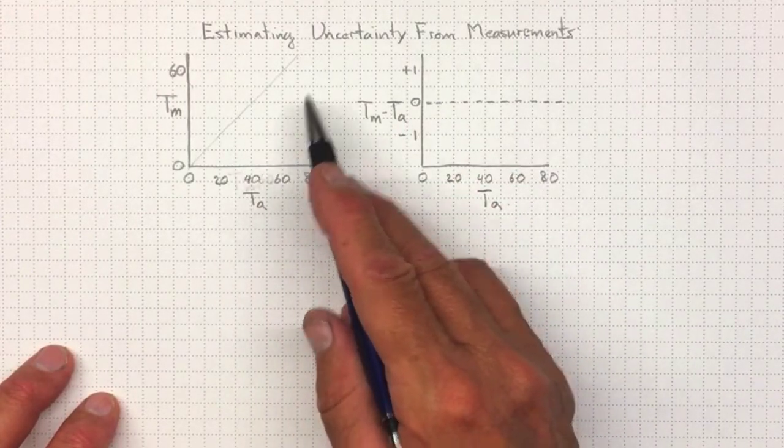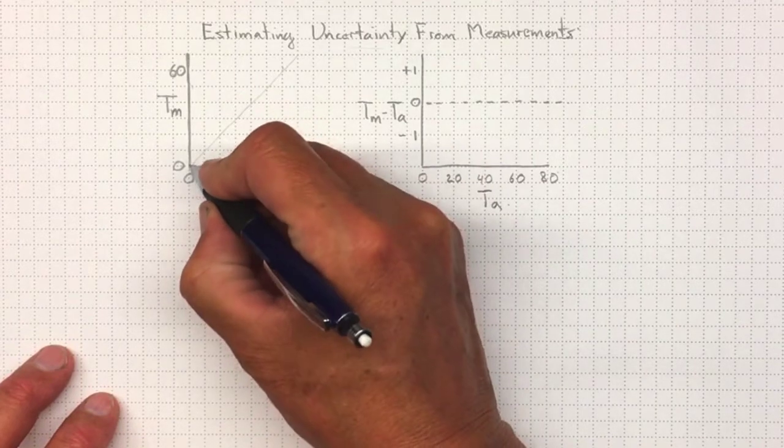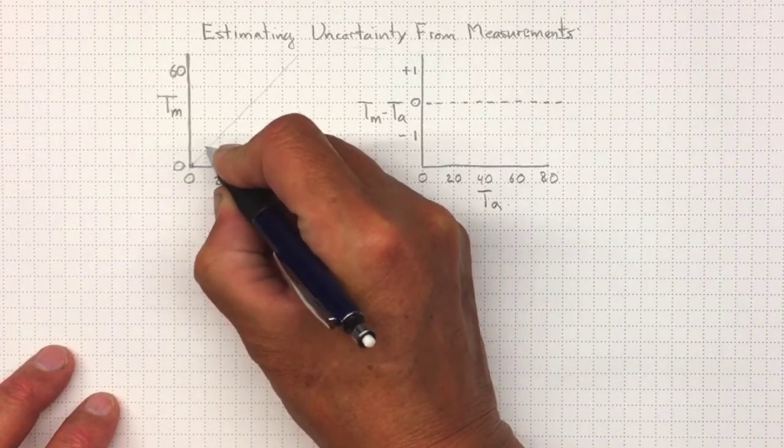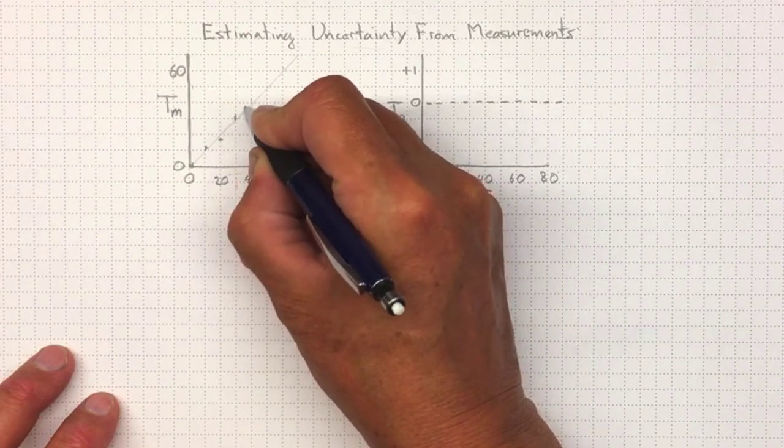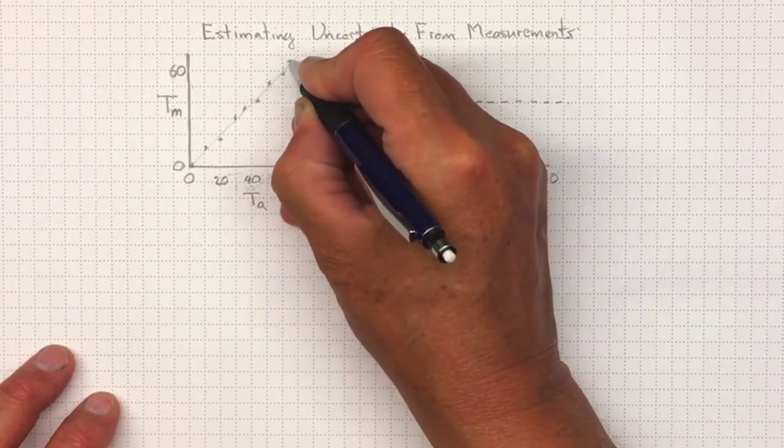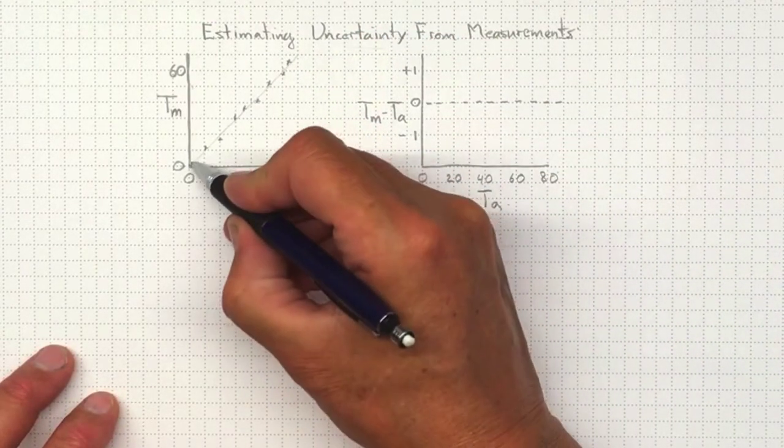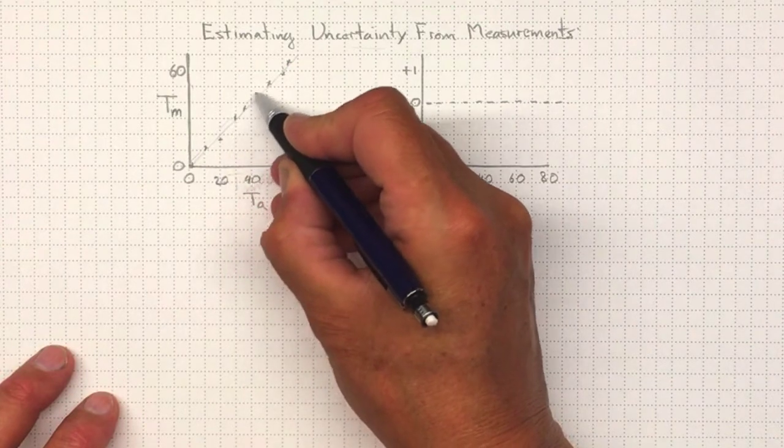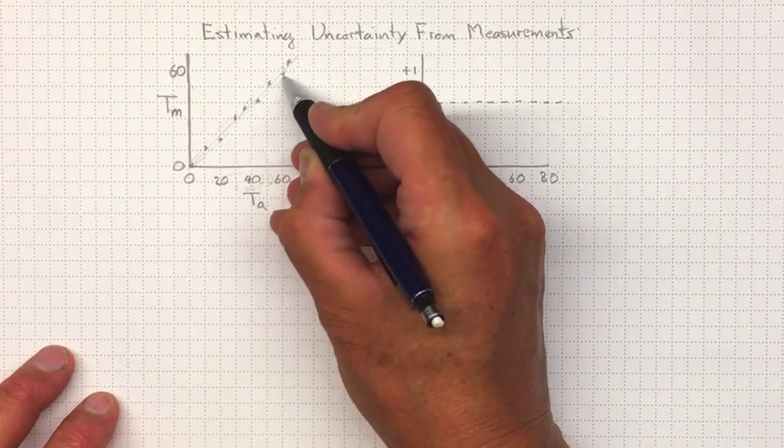But we know we don't live in a perfect world. We know we've got some uncertainty. And what we should actually see is a collection of data points that looks something like this, very close to, but not right on that straight line. So this variation around that straight line, that's the size of your uncertainty.